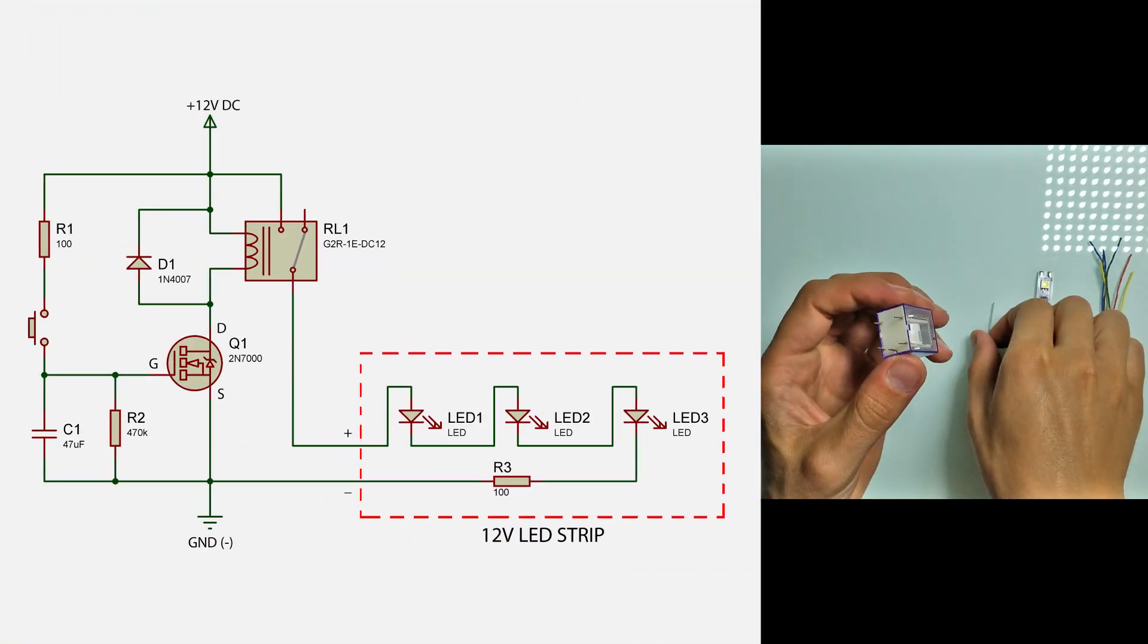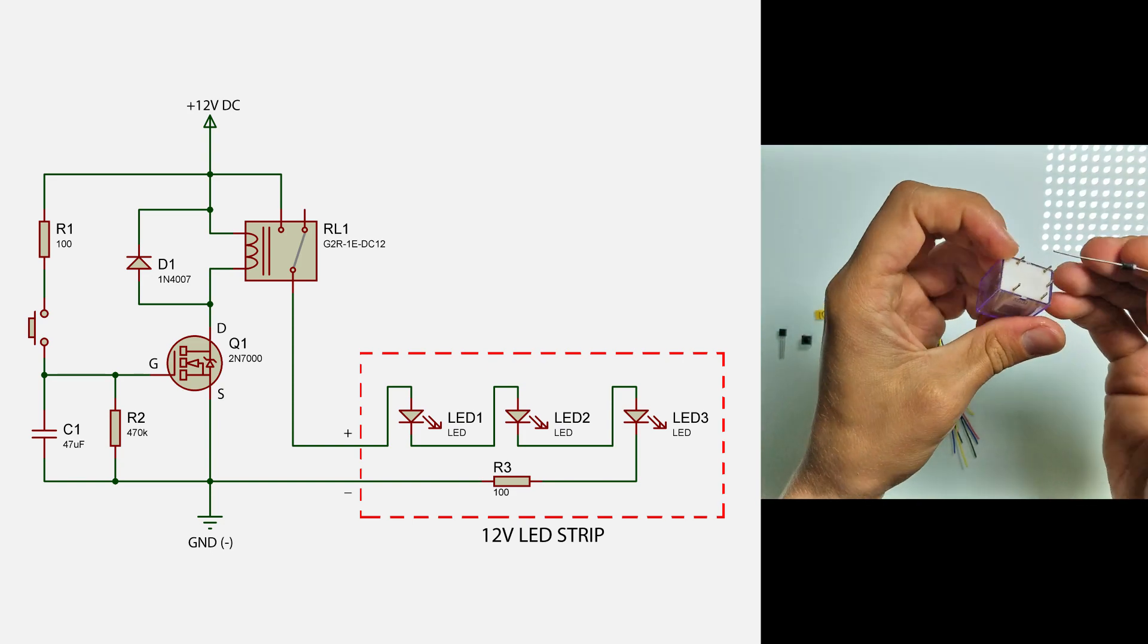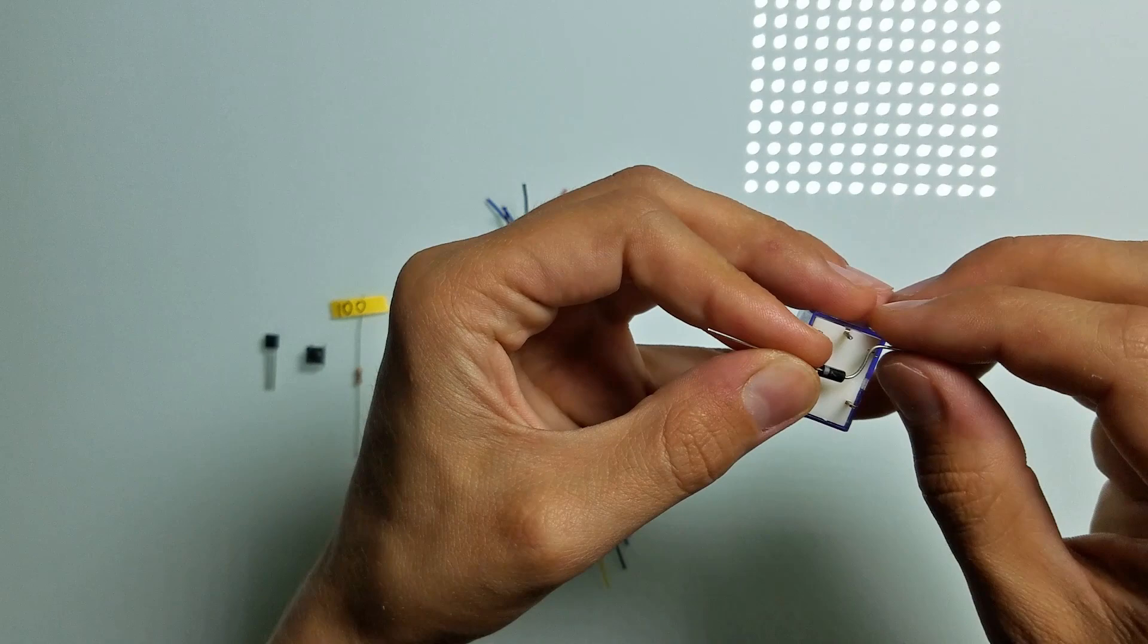On the left you can see the schematic for this project, so let's start soldering accordingly. First, let's solder the diode to the coil leads of the relay.